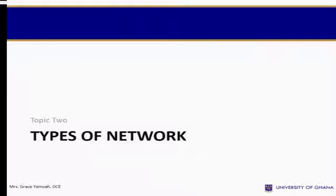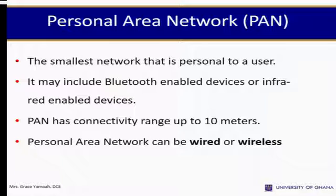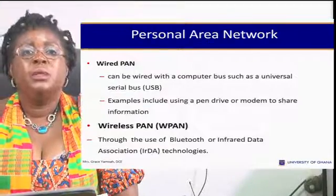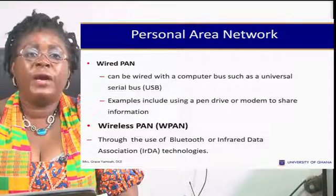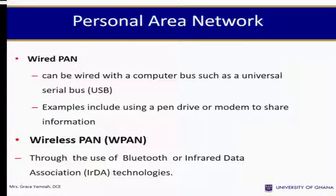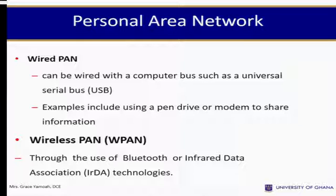Types of network — Personal Area Network (PAN): the smallest network that is personal to a user. It may include Bluetooth-enabled or infrared-enabled devices. PAN has a connectivity range of up to 10 meters and can be wired or wireless. Wired PAN can use a universal serial bus (USB); examples include using a pen drive or modem to share information. Wireless PAN uses Bluetooth or infrared data association technologies.